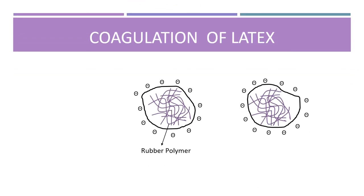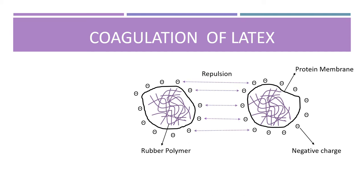Latex obtained from tapped rubber trees consists of an aqueous suspension of colloidal rubber particles. Each rubber particle consists of rubber polymers surrounded by a protein membrane. On the surface of this membrane there are negative charges that cause the rubber particles to repel each other, hence preventing latex coagulation.